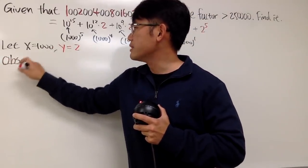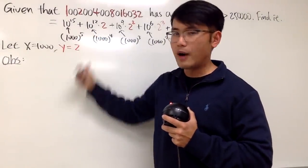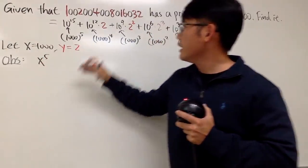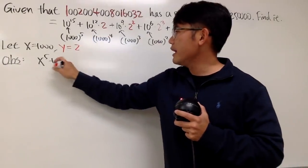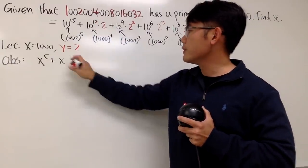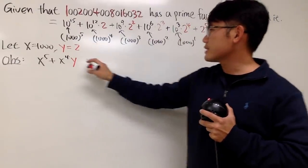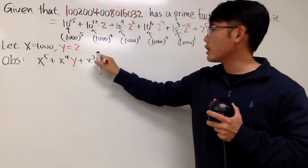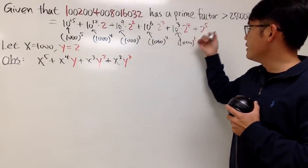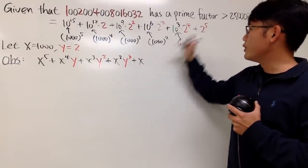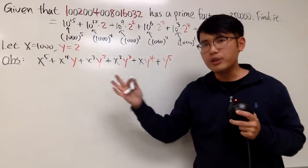Observe the following: this expression, in terms of x and y, is just going to be x to the 5th power — the first term has no y. Next term, we have x to the 4th power times y to the 1st. Then x cubed times y squared. Then x squared times y cubed. Then x to the 1st times y to the 4th. And lastly, y to the 5th. So we have such a pretty expression.